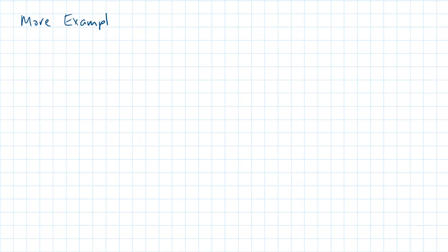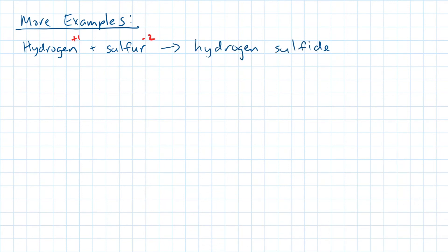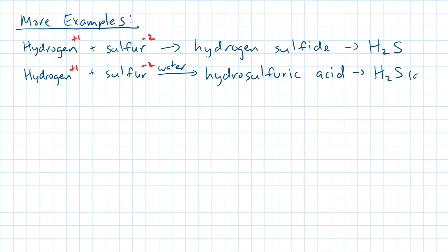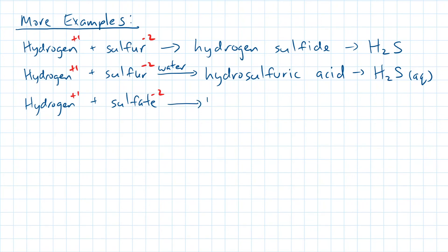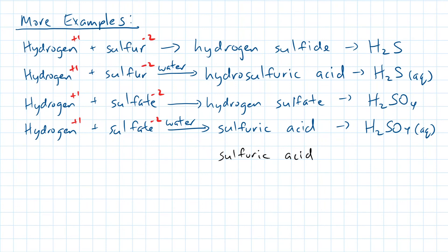Let's practice a few more examples. Hydrogen plus sulfate: hydrogen has a charge of plus one, and sulfate minus two. With the crossover rule, you get hydrogen sulfate. However, if it gets dissolved in water, it becomes sulfuric acid. A common mistake students make is that when they see sulfuric acid without the hydro, they think it's just SO4(aq). Remember, all acids must contain hydrogen.